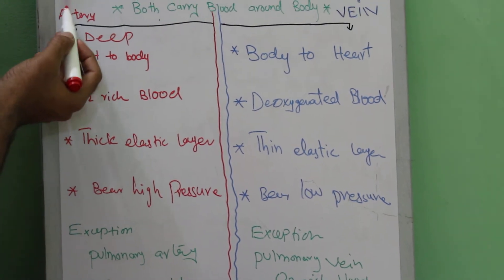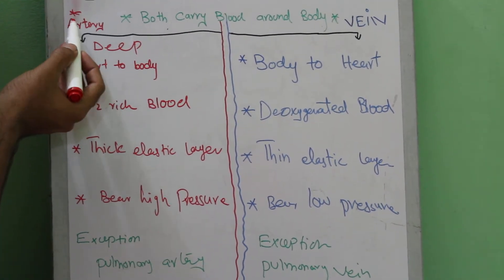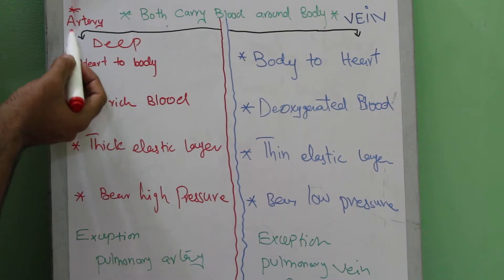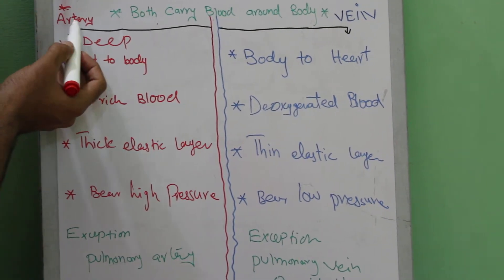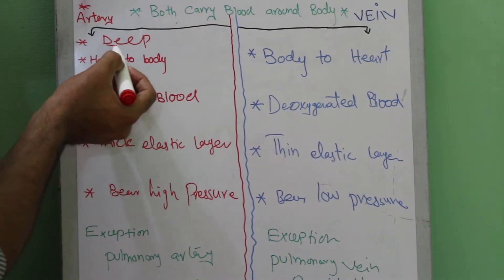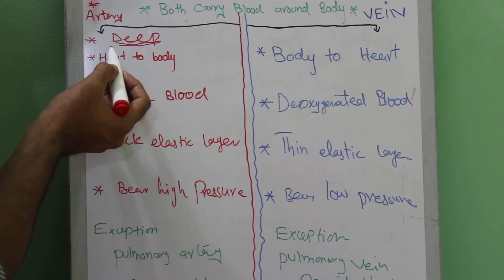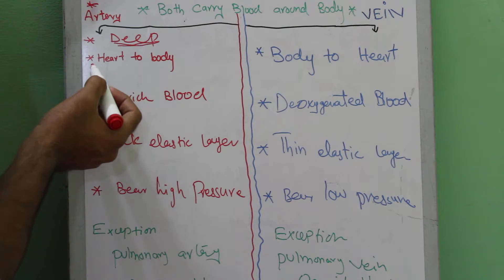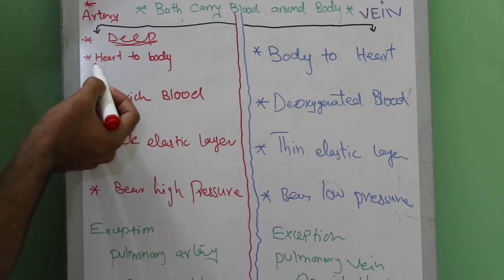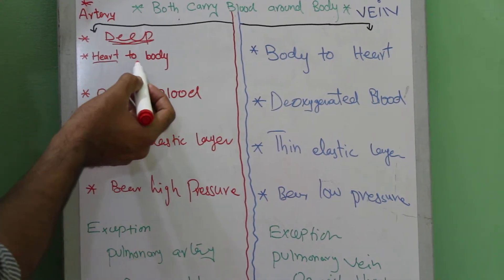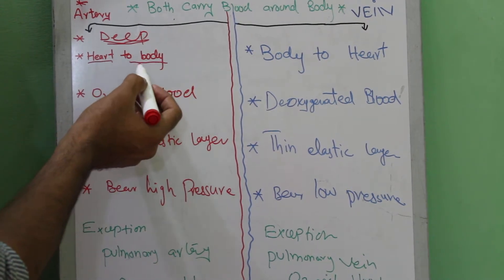Number one, what is the location of an artery in our body? Well, the arteries are located deep in our body. The arteries originate from the heart and they transport blood to the body.